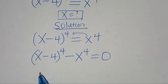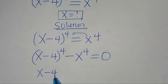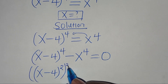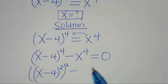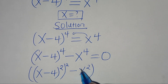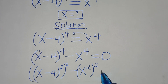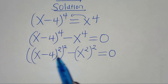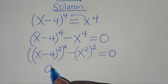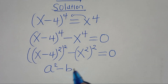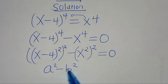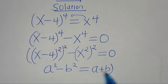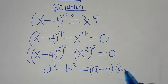We can express (x minus 4) to power 4 as [(x minus 4)²]², and subtract x to power 4 expressed as (x²)², so this equals 0. This equation is now in the form of a squared minus b squared — the difference of two perfect squares — which we express as (a + b)(a − b).